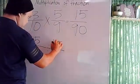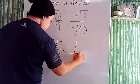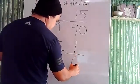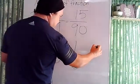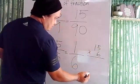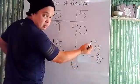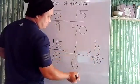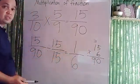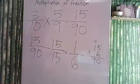15 divided by 15 is 1, and 90 divided by 15 is 6. How do I know? If you multiply 15 times 6: 6 times 5 is 30, put down 0 carry 3. 6 times 1 is 6 plus 3 is 9, equals 90. Therefore 90 divided by 15 is 6. So 1/6 is our final answer.